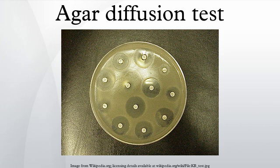Incubation procedure: Using an aseptic technique, place a sterile swab into the broth culture of a specific organism and then gently remove the excess liquid by gently pressing or rotating the swab against the inside of the tube. Using the swab, streak the Müller-Hinton agar plate to form a bacterial lawn. To obtain uniform growth, streak the plate with the swab in one direction, rotate the plate 90 degrees and streak the plate again in that direction. Repeat this rotation three times. Allow the plate to dry for approximately 5 minutes.